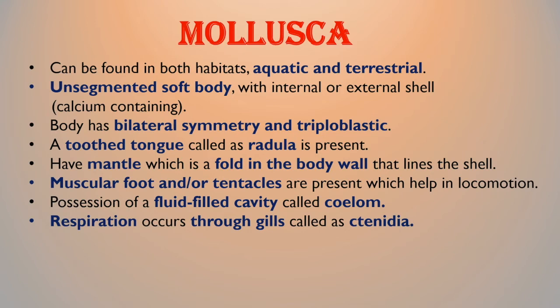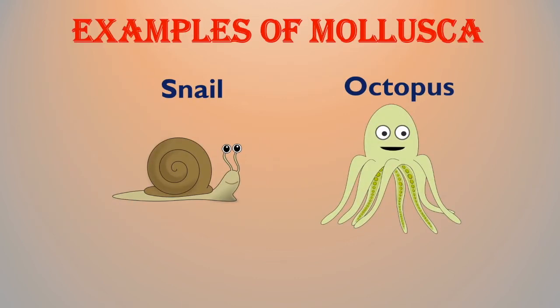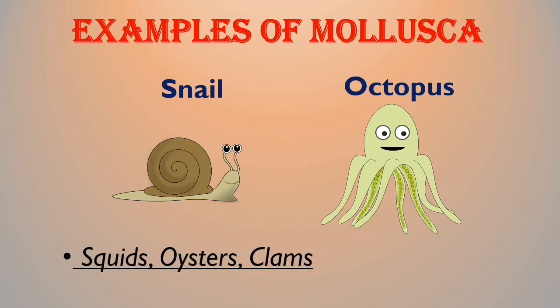They have a mantle, which is the fold in the body wall that lines the shell. A muscular foot and tentacles are present which help them in locomotion. They possess a fluid-filled cavity called a coelom. Respiration occurs through gills called ctenidia. Snail and octopus are common examples of mollusca. Other examples are squids, oysters, and clams.